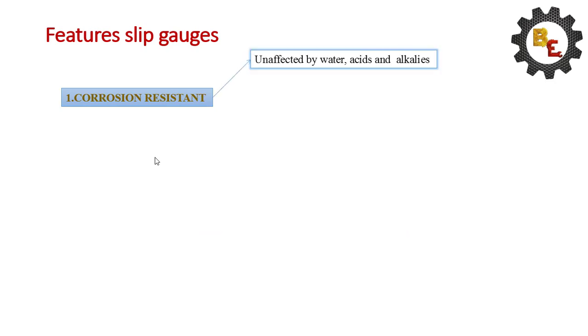Let me see the features of the slip gauges. Corrosion resistance. These are unaffected by water, acids, and alkalis because all the gauges are hardened.